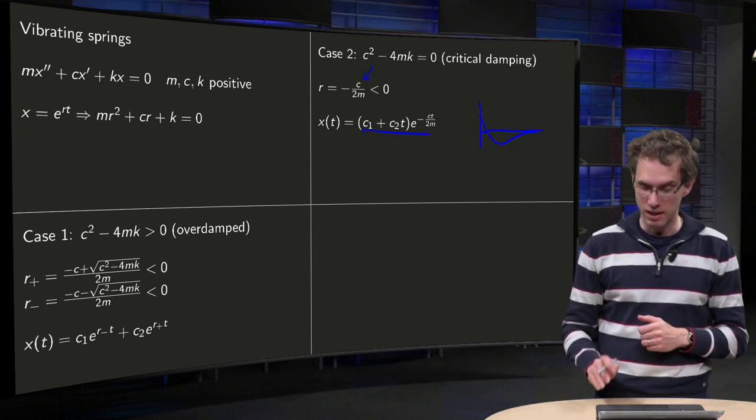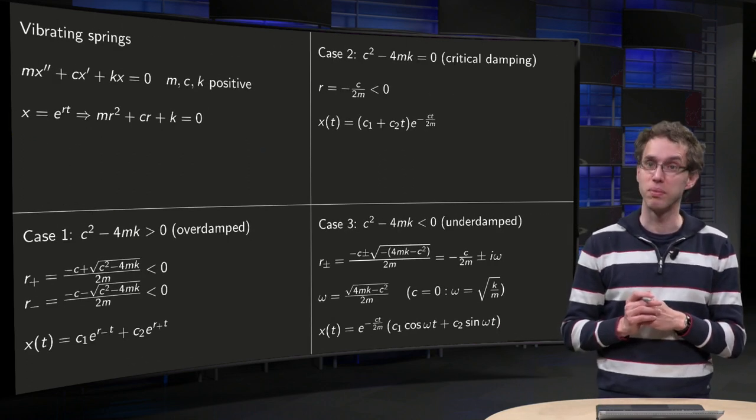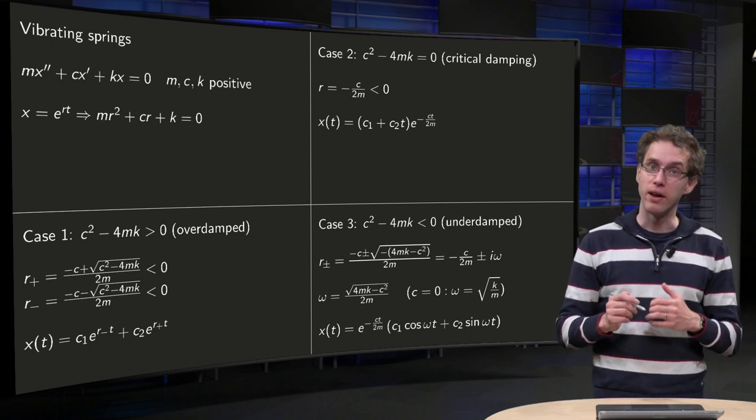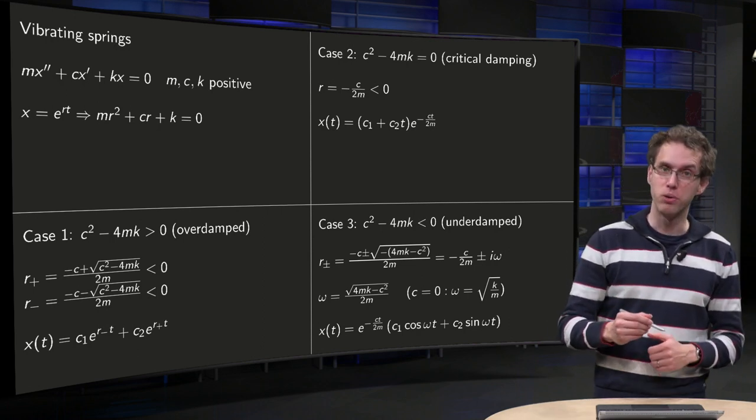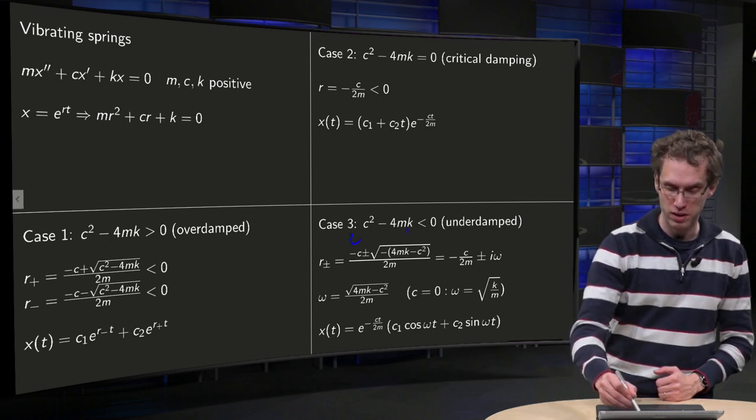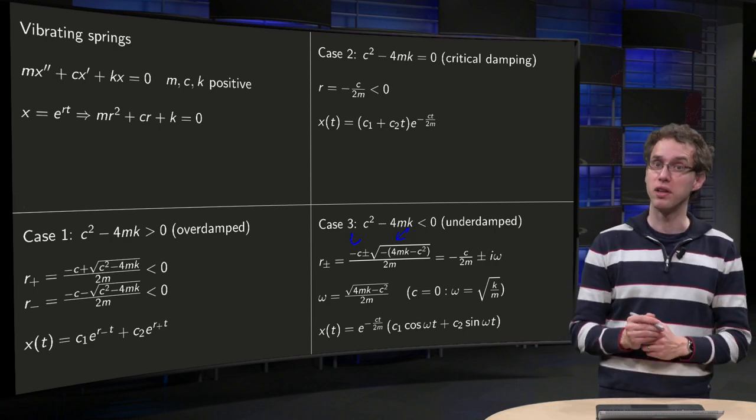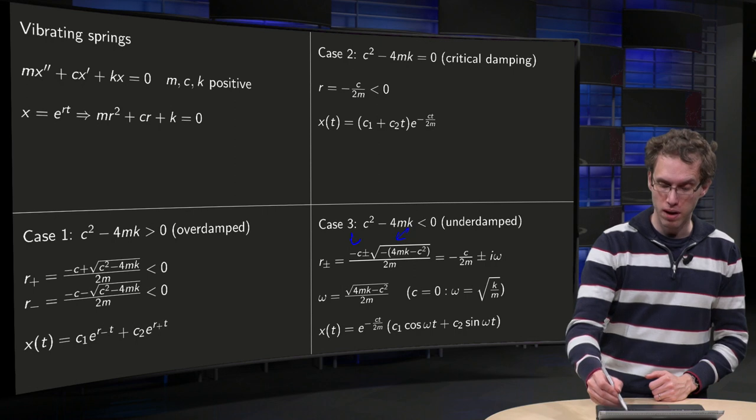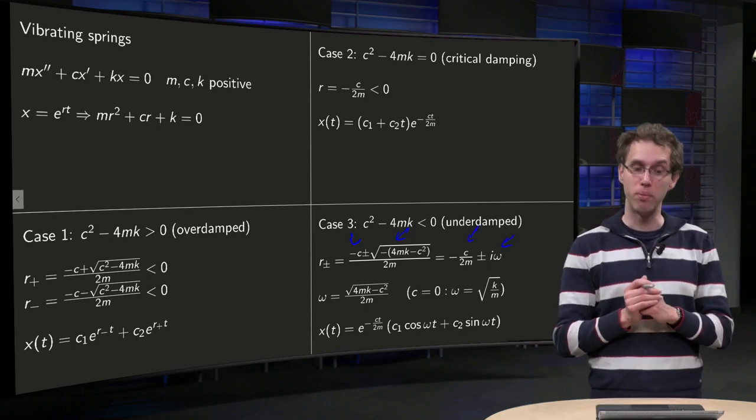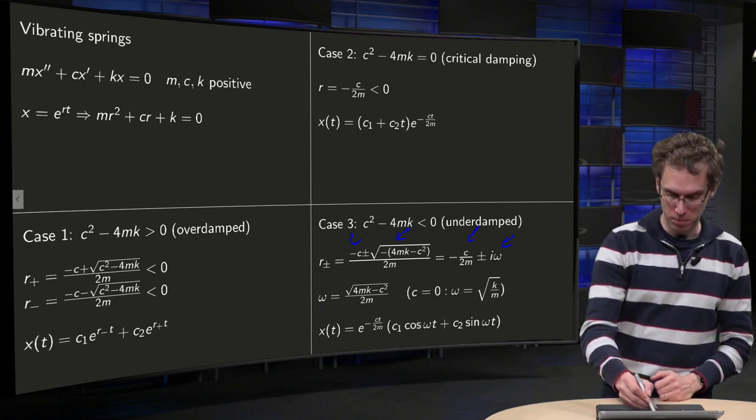So what happens then in the last case? c squared minus 4mk is smaller than zero. It's called the underdamped case. Well in that case the roots of the equation are again minus c plus or minus this number over here, which is now minus a positive number divided by 2m. So you get complex roots minus c over 2m plus or minus i times omega.